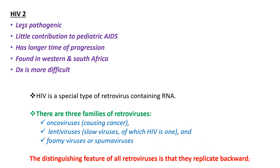HIV is a special type of retrovirus containing RNA. There are three families of retrovirus: oncovirus, which causes cancer; lentivirus, which are slow viruses — of which HIV is one; and foamy virus. The distinguishing feature of all retroviruses is that they replicate backward.